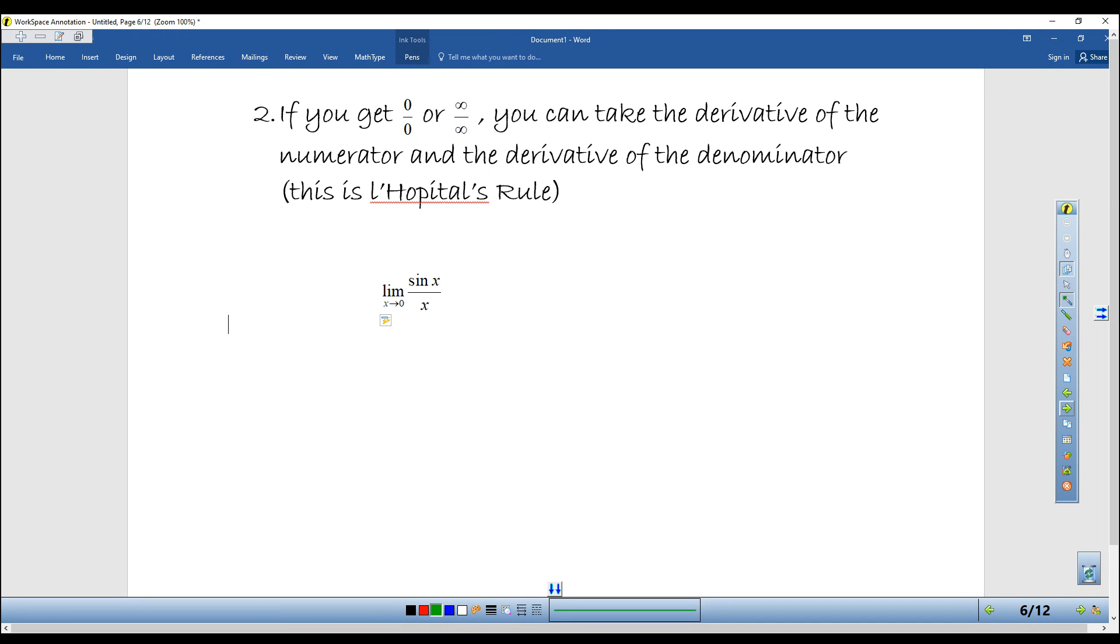If you get zero over zero or infinity over infinity, which we didn't in this example, you can take the derivative of the numerator and the derivative of the denominator. That's what we call L'Hopital's rule - it's a way to deal with limits.